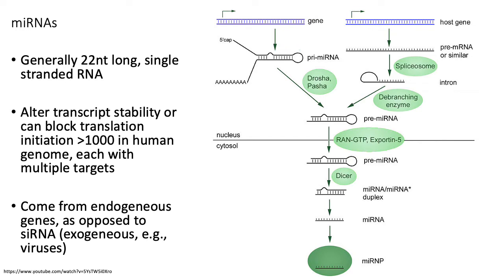We'll spend a few minutes talking about just a select few types of non-coding RNAs. The first are microRNAs. In their mature form, microRNAs are generally around 22 nucleotides long and are single-stranded RNA molecules. In some sense they resemble siRNAs that we talked about before.